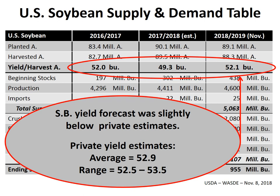One of the key values that market traders and analysts were looking for from this November report was any adjustments to the forecast for national average yields for soybeans. The revised estimate is 52.1 bushels per acre — about one bushel per acre lower than the October forecast and actually below the lowest trade estimates. The average trade estimate before the report was released was near 52.9 bushels per acre, with the range running from 52.5 to 53.5. So the USDA estimate came in below what traders were expecting.